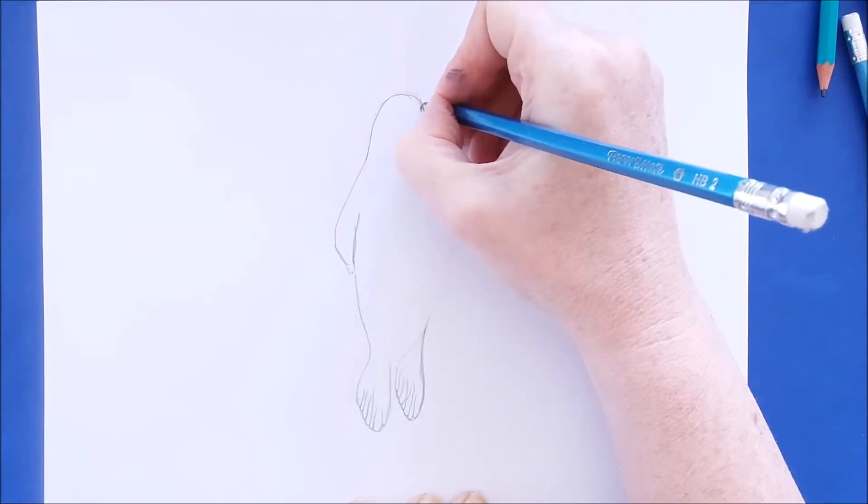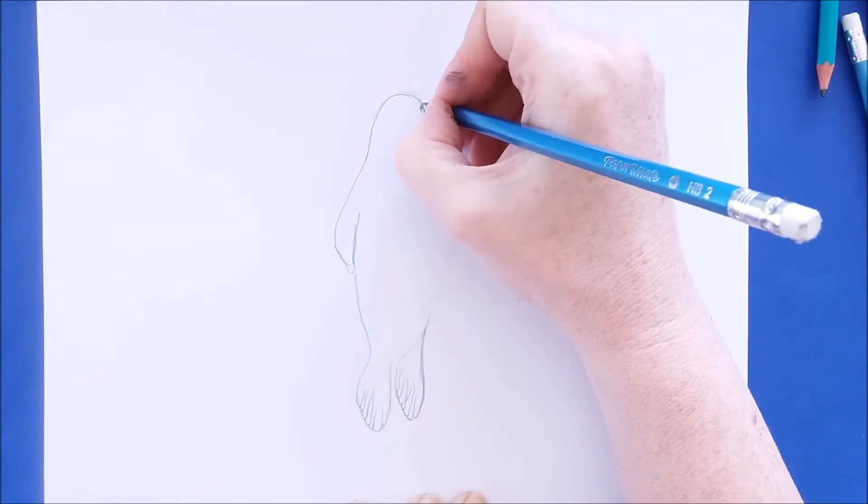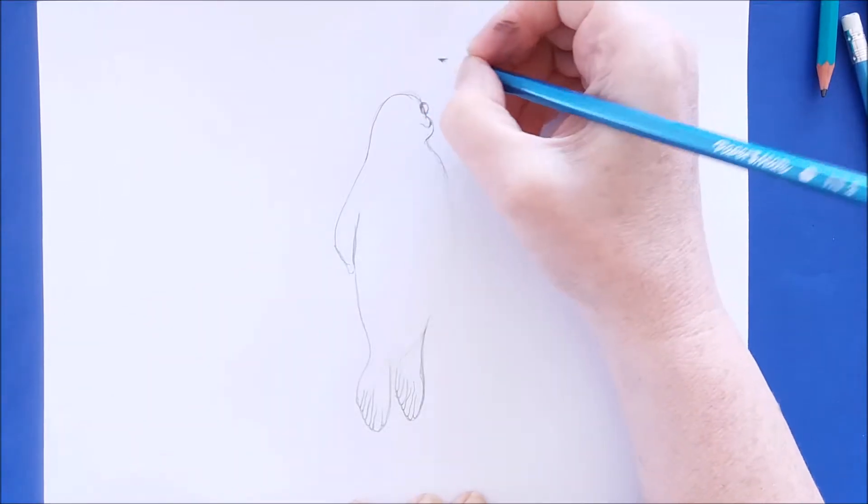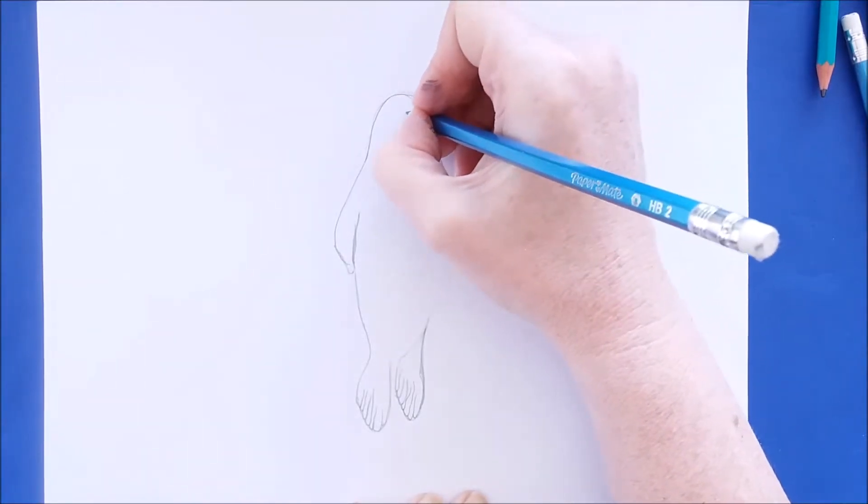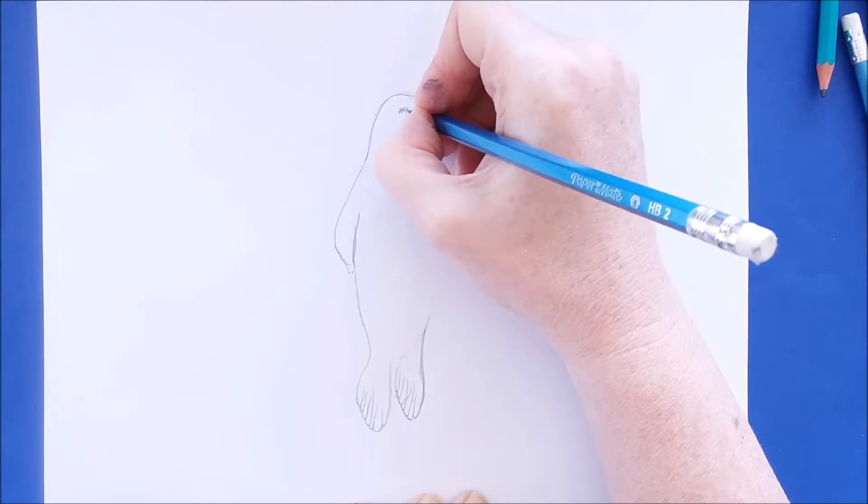And then I'll put his eyes in and they're round circles. So here's one eye and then I'll add the other eye right here.